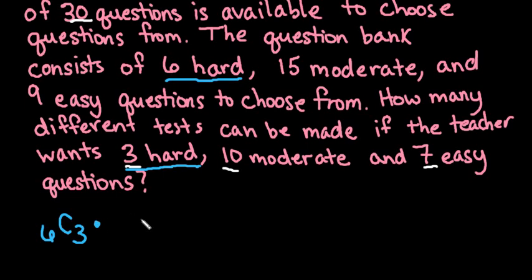And then we're going to use the fundamental counting principle because remember the fundamental counting principle tells us that if we multiply the number of ways possible for each of our situations it'll give us our total number of possible outcomes. So the next thing that we want to look at is our moderate questions. We have 15 moderate questions and we want to select 10 of them. So our next one would be set up as 15 things taken 10 at a time.